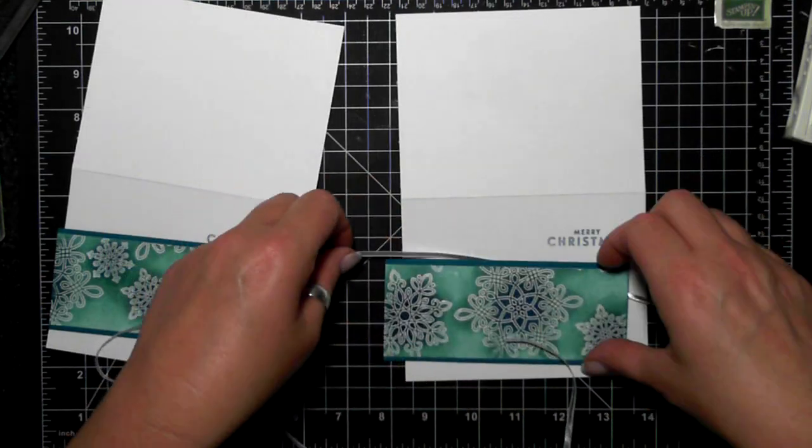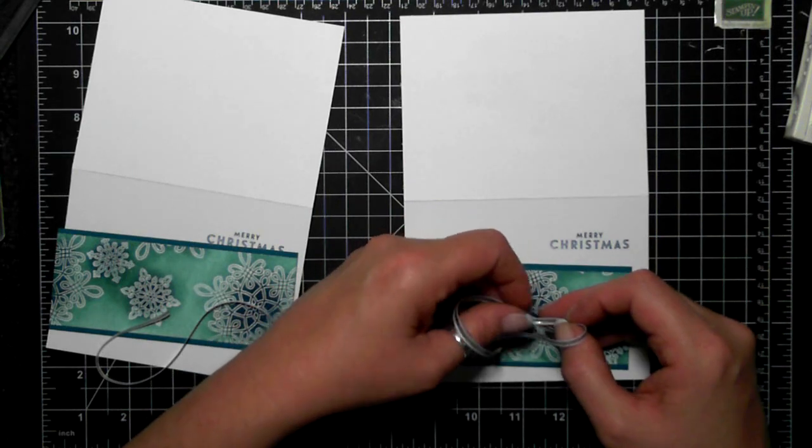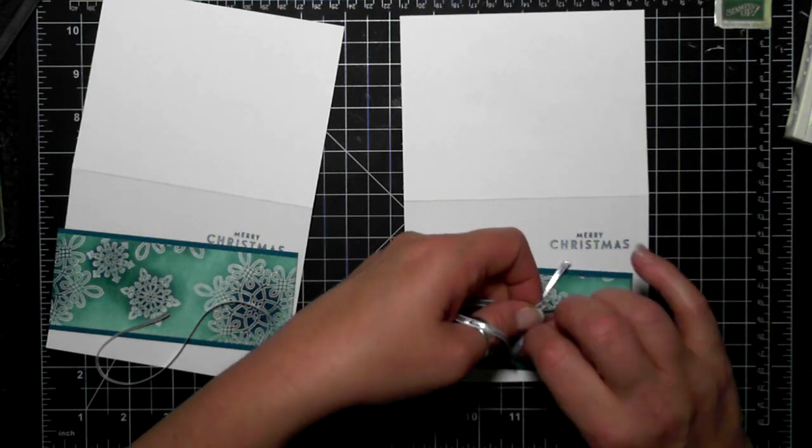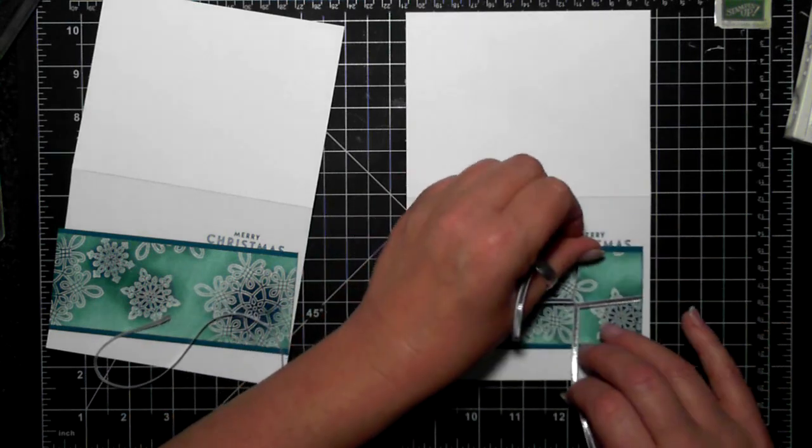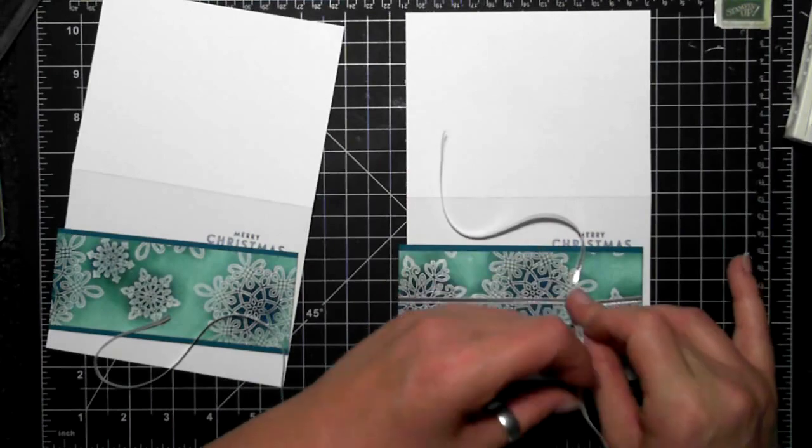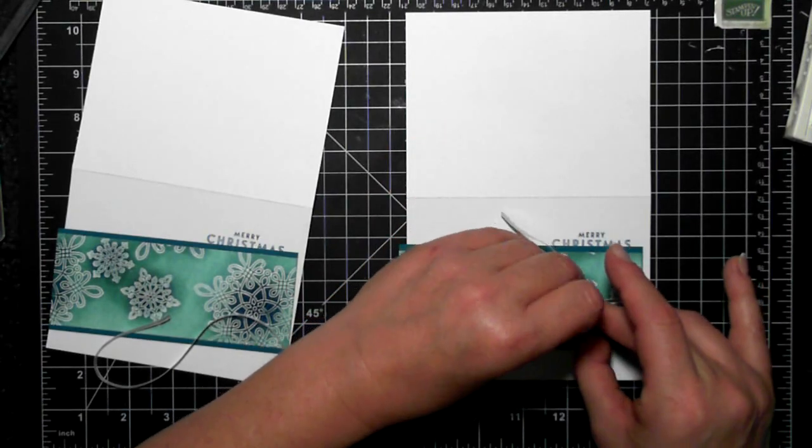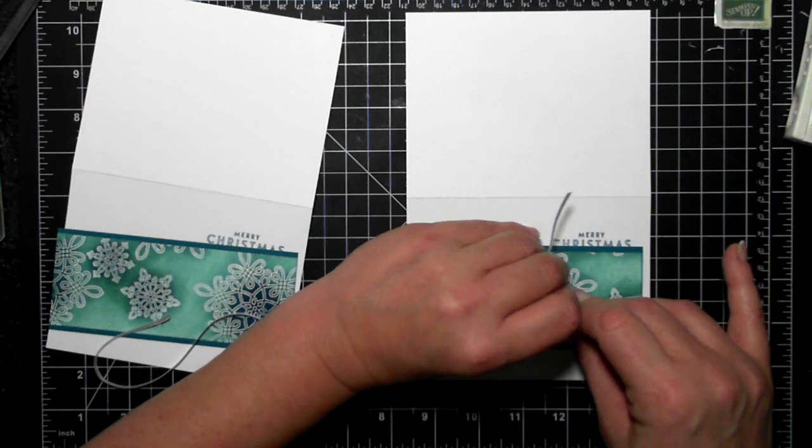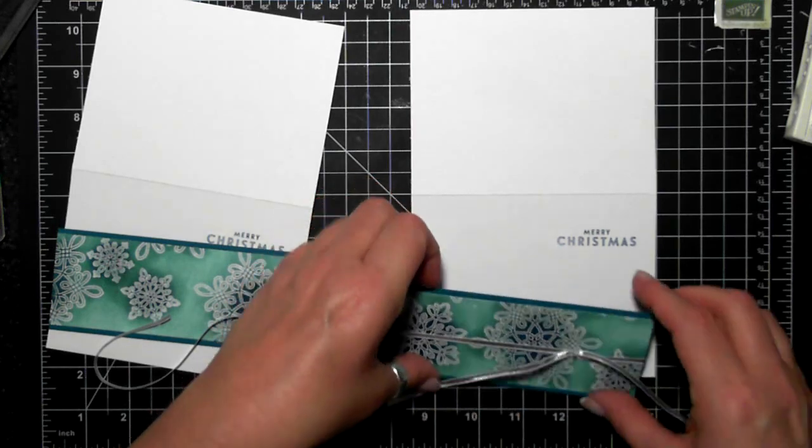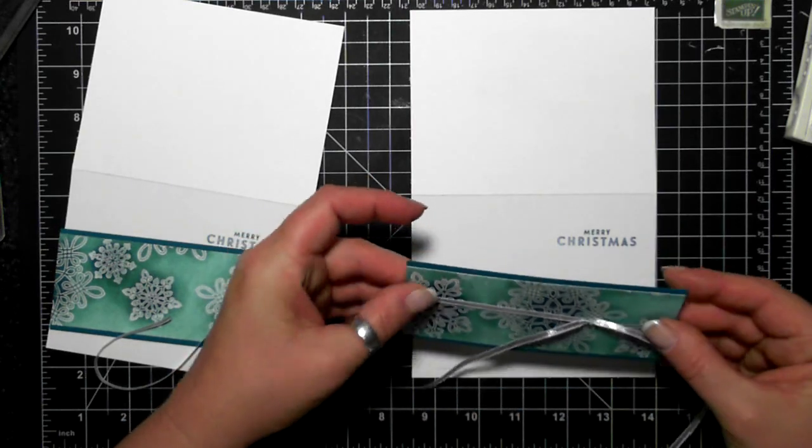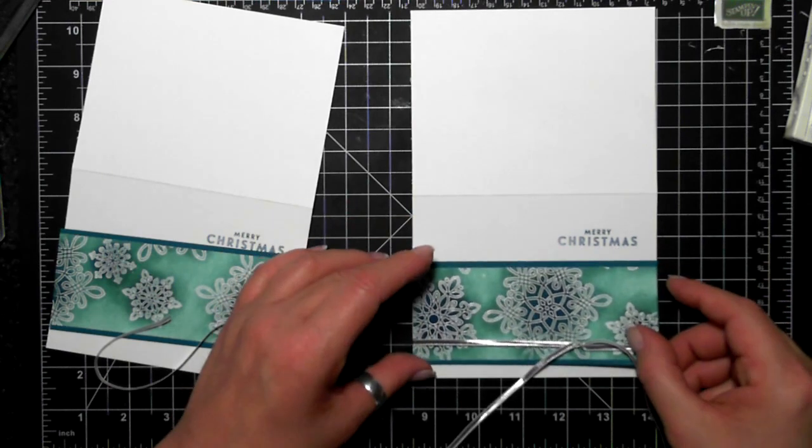Then I'm using Island Indigo for the strip, and then of course I'm going to fumble with a silver bow. That's the one-eighth inch silver ribbon. And I stamped Merry Christmas as well with Island Indigo, and that's that heavyweight cardstock, the whisper white.